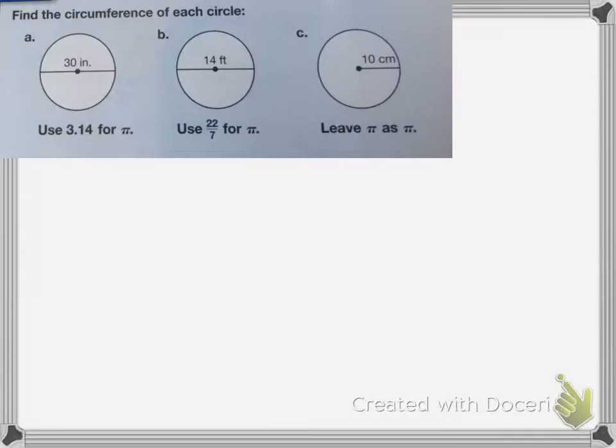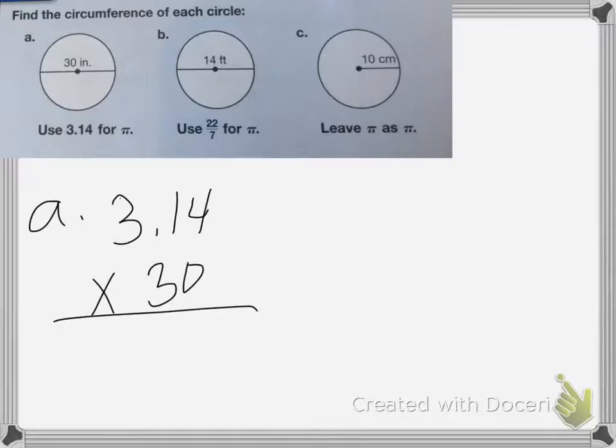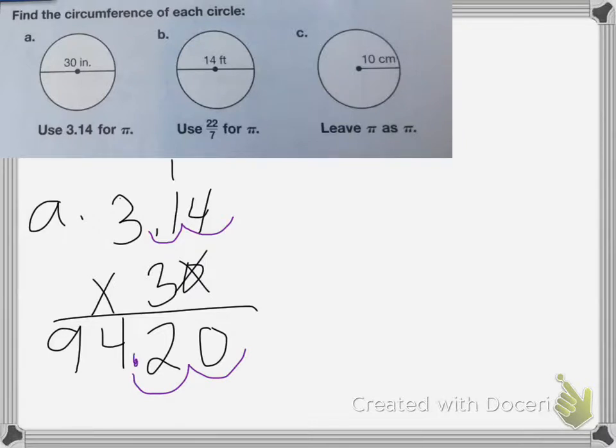Okay, so we're going to find the circumferences of these circles using these different methods. So on A, I'm going to use 3.14 for pi. So I'm going to do the 30 inches, because that's my diameter. I'm going to do 3.14 times by my 30 inches. Okay, drop the 0 down. 3 times 4 is 12, carry the 1. 3 times 1 is 3, plus 1 is 4. 3 times 3 is 9. Now we count the decimal spots, 1, 2, 1, 2. So my answer is 94.2 inches.